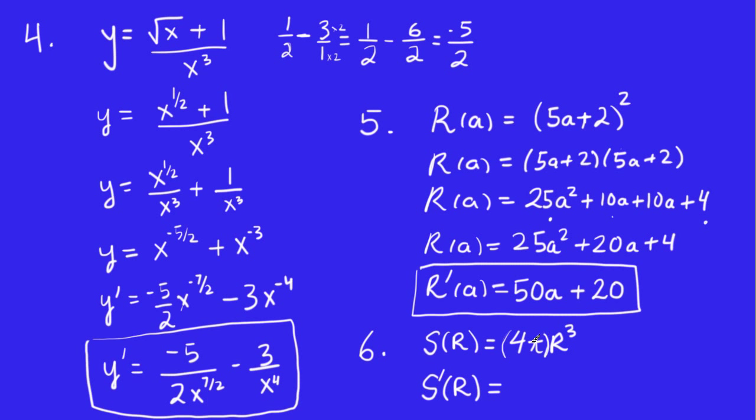So by that rule that says if you have a constant times a function, all you do is you pull out the constant to the front, and then multiply by the derivative of the function that's beside the constant. What's the derivative of R³? 3R². And then why don't we just multiply this across here. We got 4 times 3 is 12. So it's 12πR². And that's it.